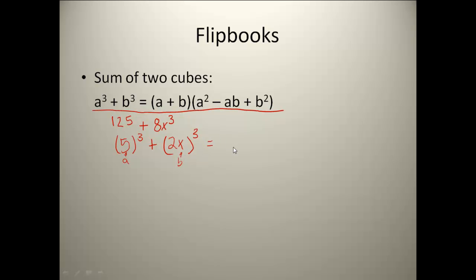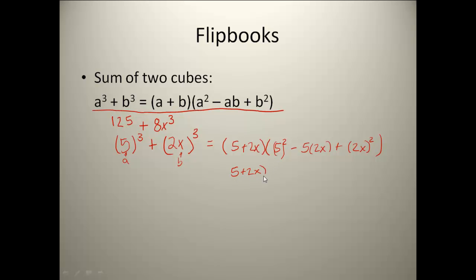When I go to factor this, I follow my pattern that says I take (a + b), so I'm going to have (5 + 2x) times a squared. So I'll have 5² minus a times b, which gives me 5 times 2x, plus b squared, which is (2x)². Then I go back and simplify: 5 squared is 25, 5 times 2x gives minus 10x, and (2x)² gives 4x².